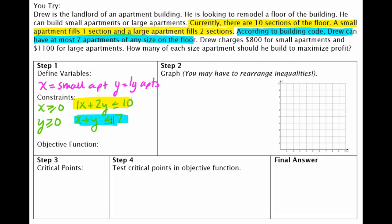Alright, now the next sentence represents our objective function. It says he charges $800 for rent for small apartments and $1,100 for rent for large apartments. So that's the money that he's going to be taking in. That's his profit for managing these apartments. So my objective function,